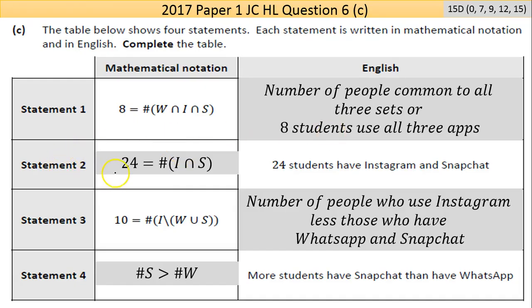Statement 2: 24 equals the number of people who use Instagram intersected with those who use Snapchat. So I've basically said 24 students have Instagram and Snapchat intersection, common to both.